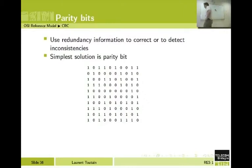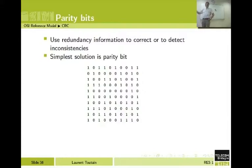One very simple solution that has been defined in the early days of telecommunication is to use a parity bit. It means that in a sequence I will always send an odd or an even number of bits equal to 1. Here in the first row I have sent 6 bits equal to 1.